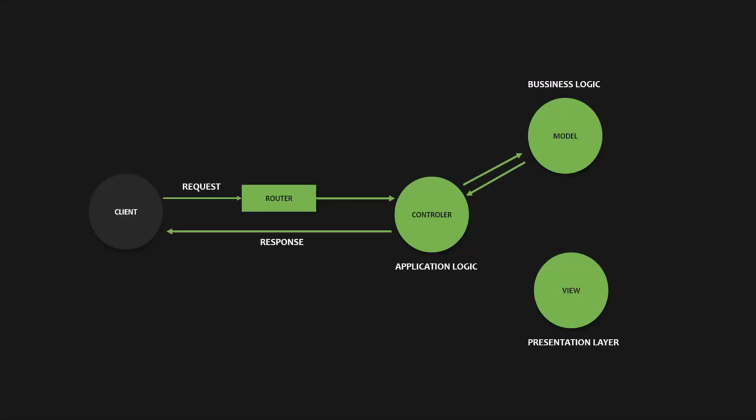But if we want to render a website, then the view will be there. In that case, after getting data from the model, the controller might pass that data to the view, create a web page using HTML and that data, and then that web page will be sent in the response. In the view layer there is usually one view template for each page — for example, a view for all movies, a view for movie details, a view for create a new movie page, or a login page.